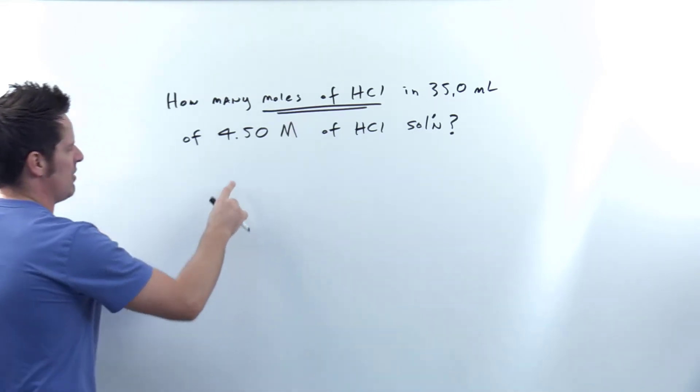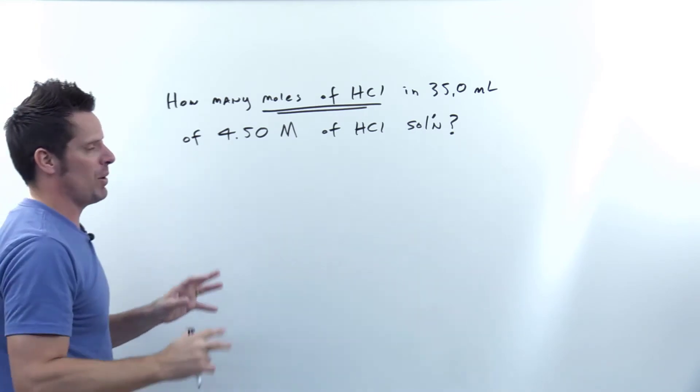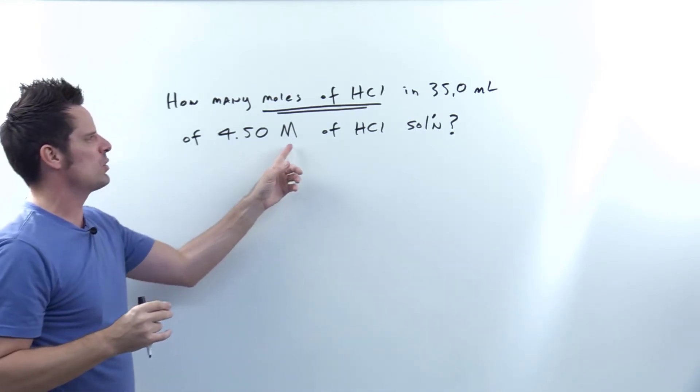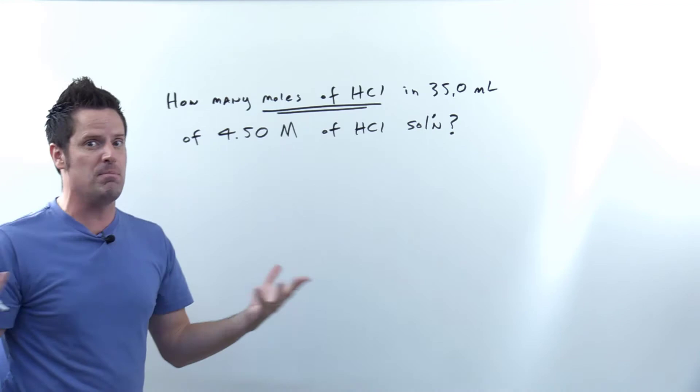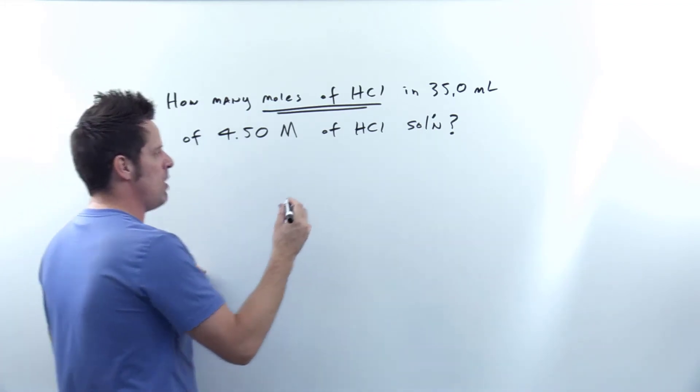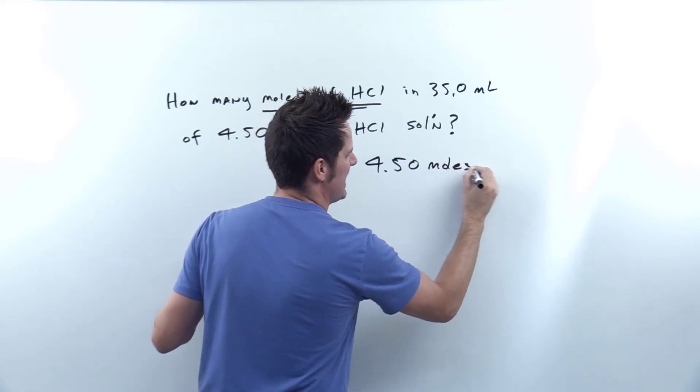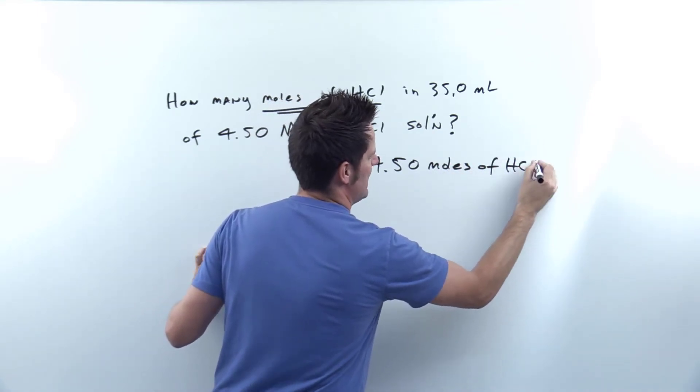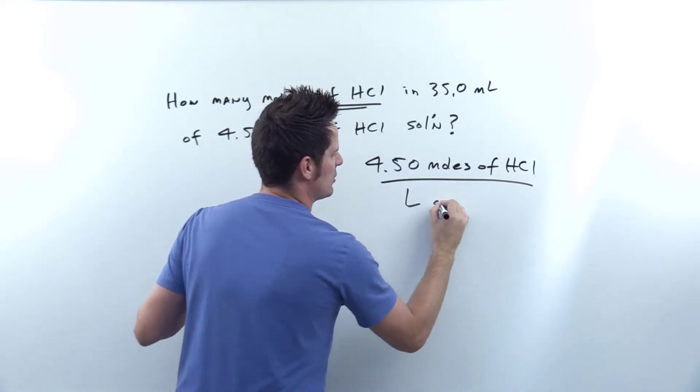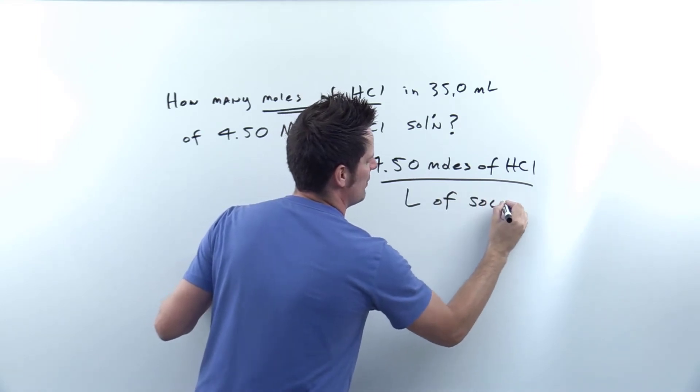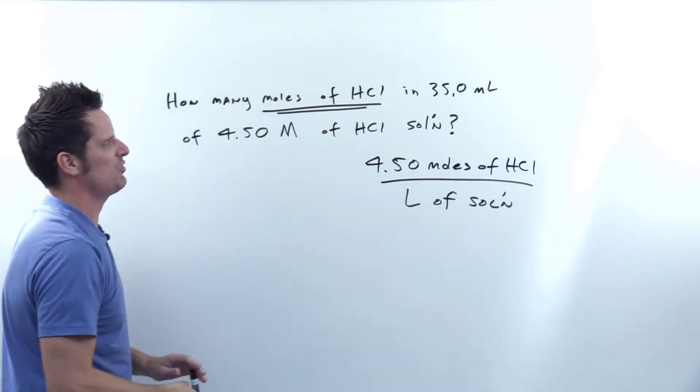Now, it helps, by the way, if we rewrite this number, showing what the true units are. 4.50 molar, or capital M, means what? The capital M is molar, which in this case is 4.50 moles of HCl, that's what the capital M means, over liters of solution. And again, I'm going to abbreviate solution as sol apostrophe N.